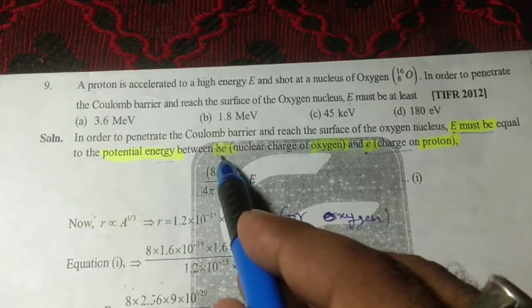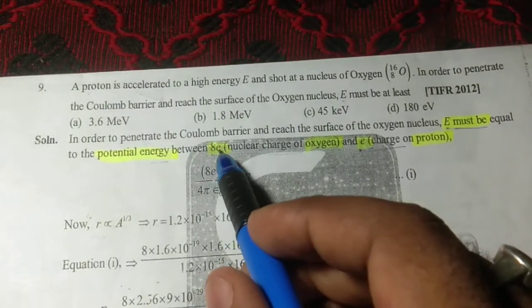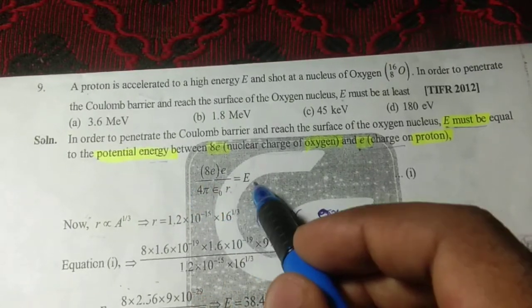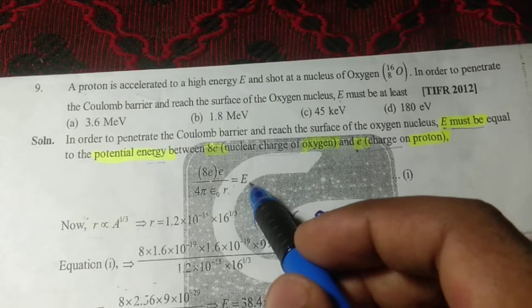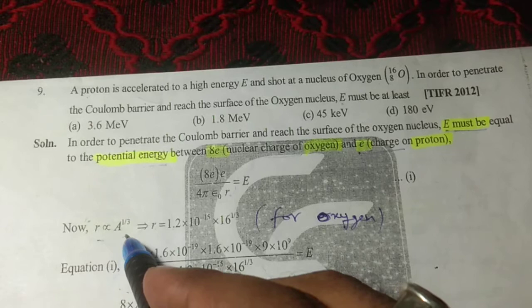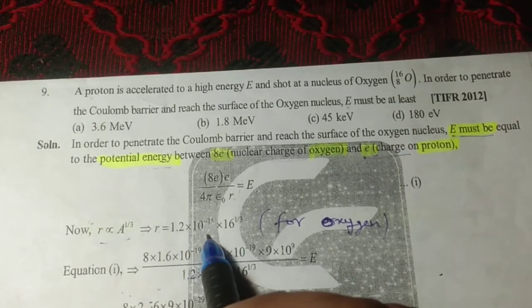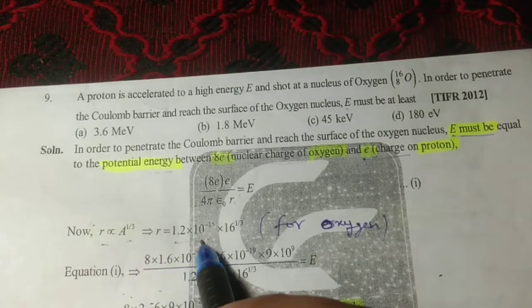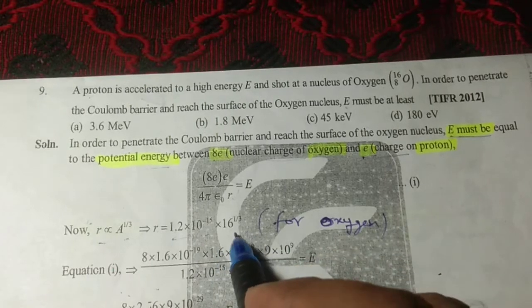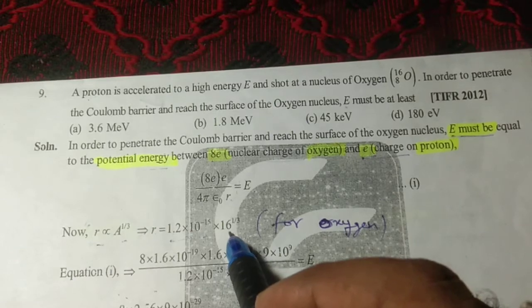The Coulomb force between the oxygen nucleus (with 8 protons) and the proton will be equal to the potential energy E. We know that the radius is directly proportional to A^(1/3), where R = 1.2 × 10^(-15) × A^(1/3). This is R₀, the constant, and A is the mass number of oxygen.